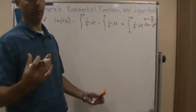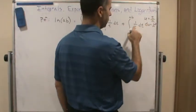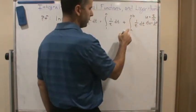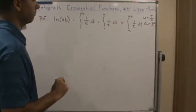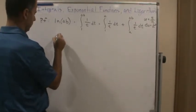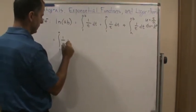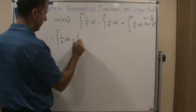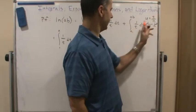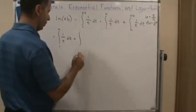Now I'm going to change the limits of integration. When t equals a, u equals one. When t equals ab, u equals b. Also, 1/t becomes 1/(au) and dt becomes a·du, so the integrand simplifies to (1/u) du.